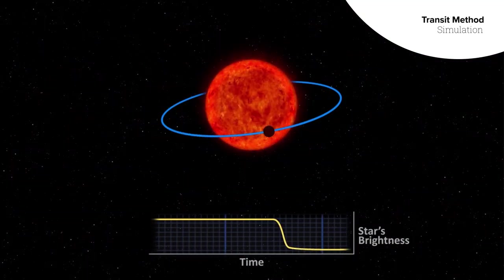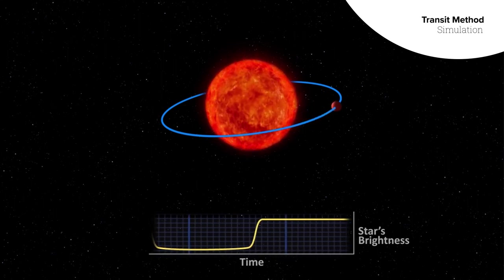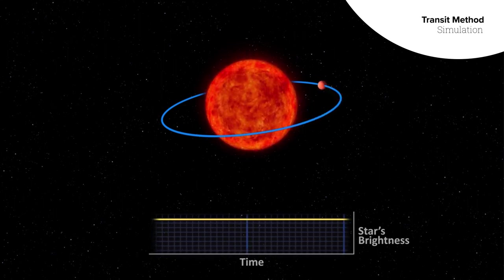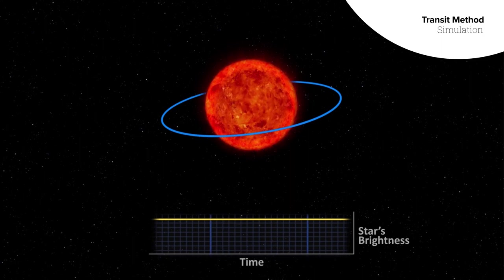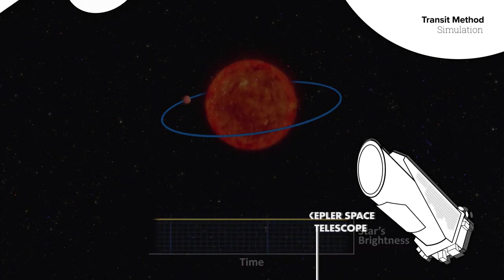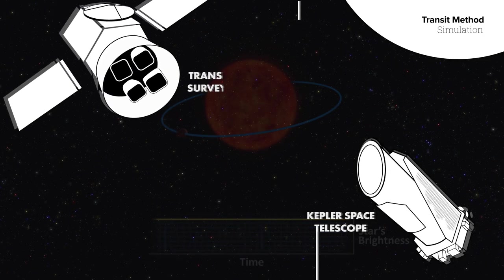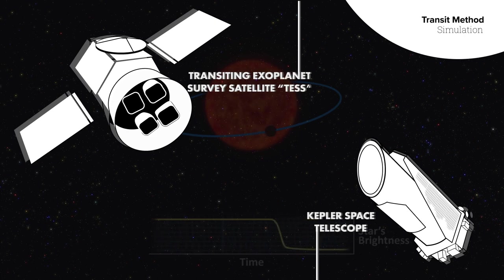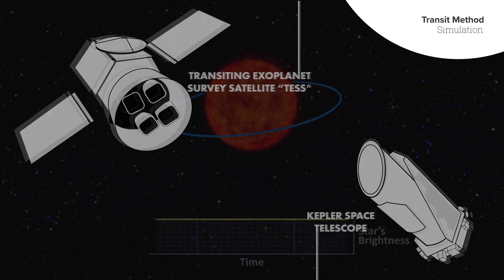The most common method is to look for an eclipse or transit as a planet passes in front of its host star. This is how the Kepler Observatory found planets, by staring at a large region of the sky and waiting for planets to pass in front of their stars, taking snapshots every second. The Transiting Exoplanet Survey Satellite uses the same technique on our nearest neighbor stars.